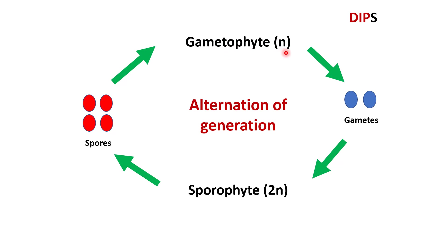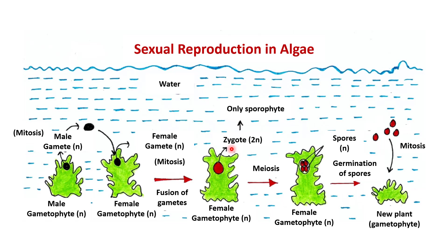So this much you have to remember. If you understand this, you can understand the rest. Let's talk about sexual reproduction of algae now. In algae, the main and dominant plant body is the gametophyte.